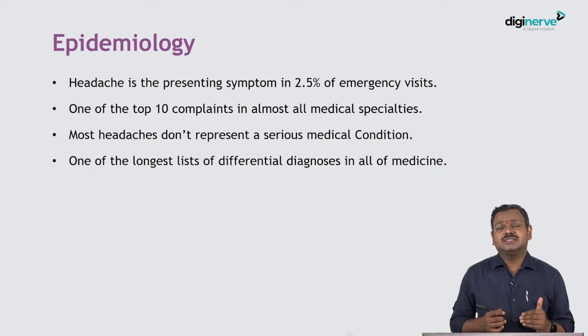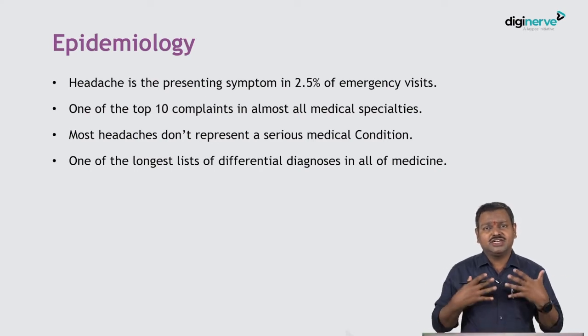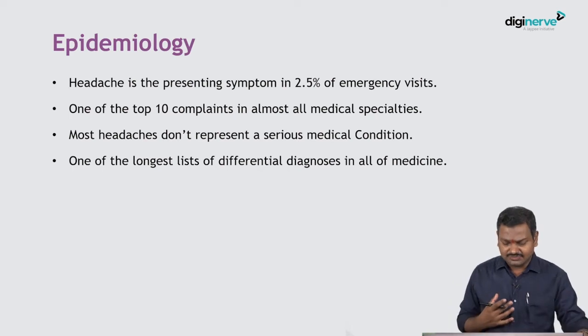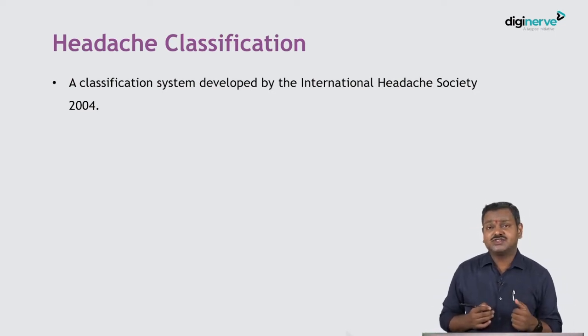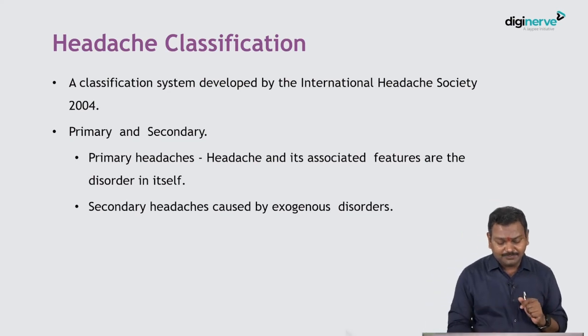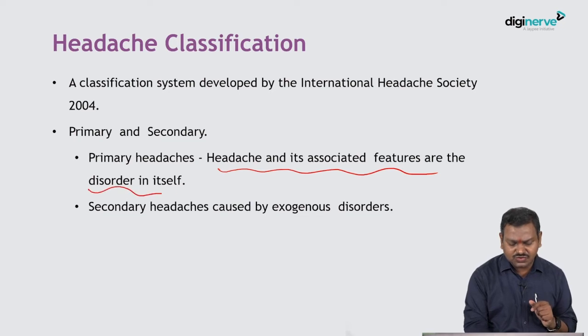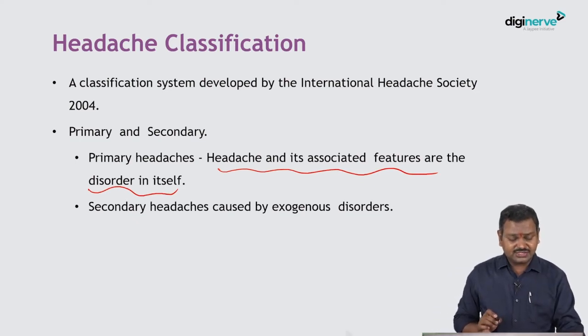The differential diagnosis for a headache is a very long list of diseases. The first approved classification came in 2004 from the International Headache Society, which classified headache into two categories: primary or secondary. Primary headache is where the headache itself is the disorder with no other underlying condition. Secondary headache is where the headache is due to an exogenous disorder. This basic classification has been updated with new diseases added, but it remains the foundation.